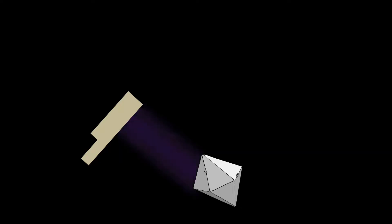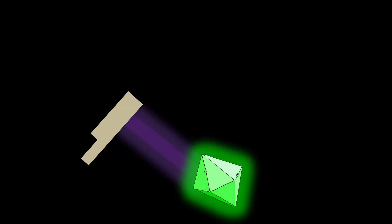Let's just recap the process of fluorescence. On the left you can see my ultraviolet light source. When I turn it on, ultraviolet light causes the mineral crystal to glow. The ultraviolet light is a short wavelength, or high energy, form of light. This high energy radiation is absorbed by the atoms and molecules in the mineral crystal, and that absorbed energy is then re-released as a visible wavelength of light.